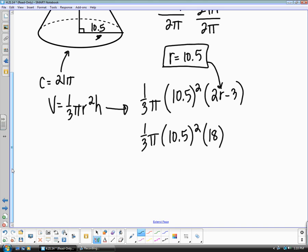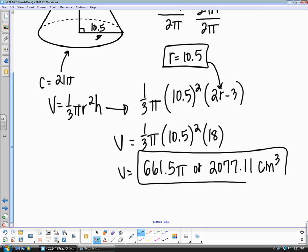Now, you can just go ahead and solve this like a normal volume problem. And when you do that, when you do all your calculations, you're going to get 661 and a half pi. Or if you want to multiply it all out, you're going to get 2,077.11 centimeters cubed.